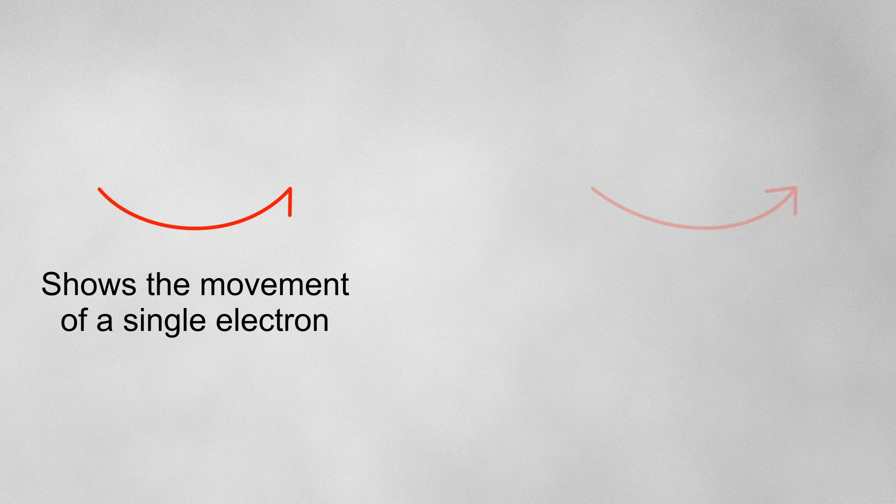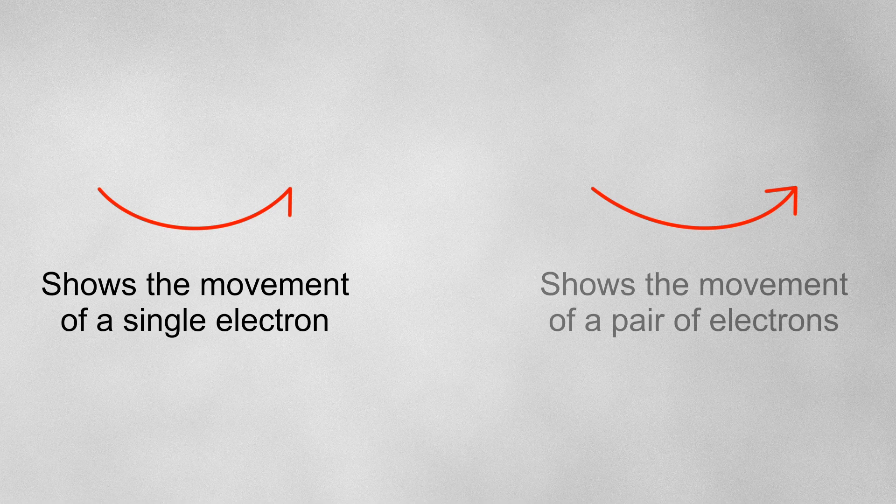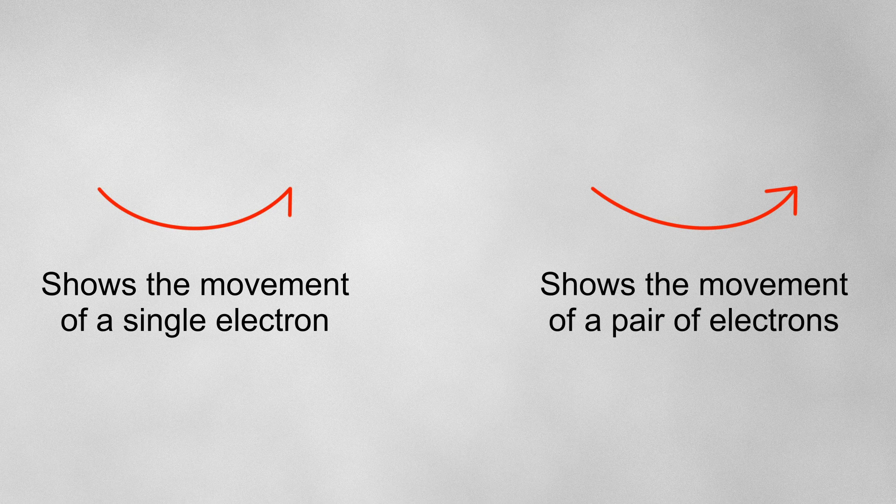The rest of the time, we'll use a regular curly arrow to show the movement of a pair of electrons.